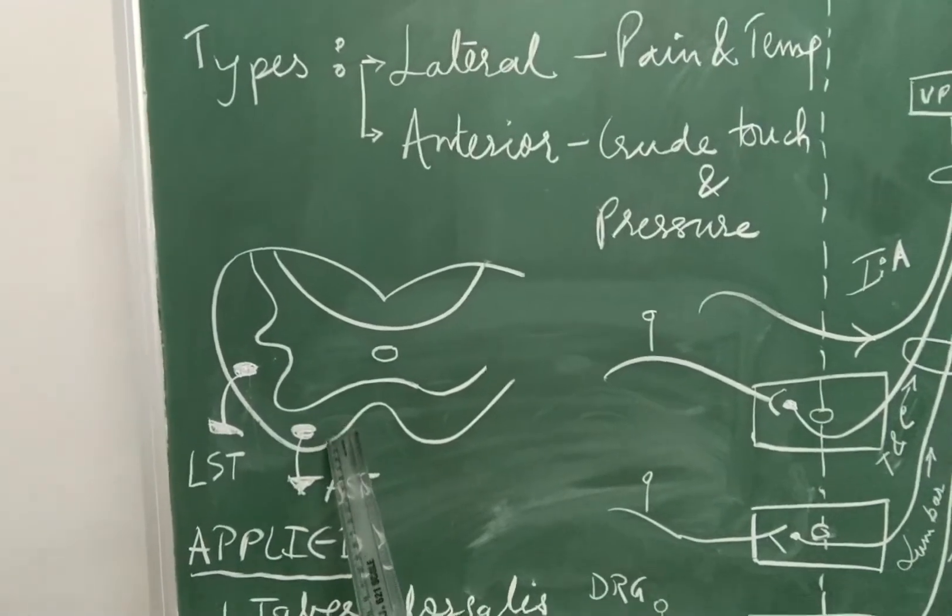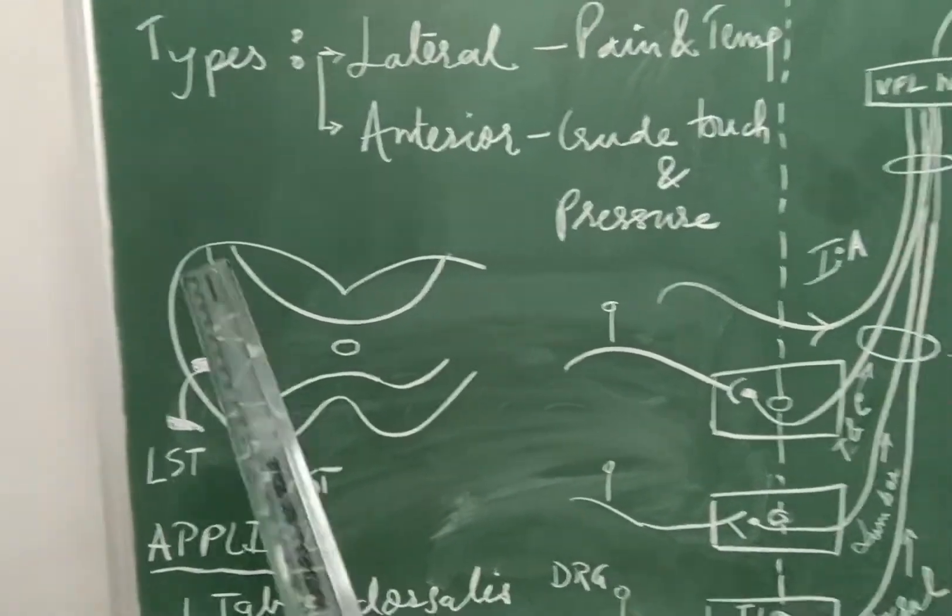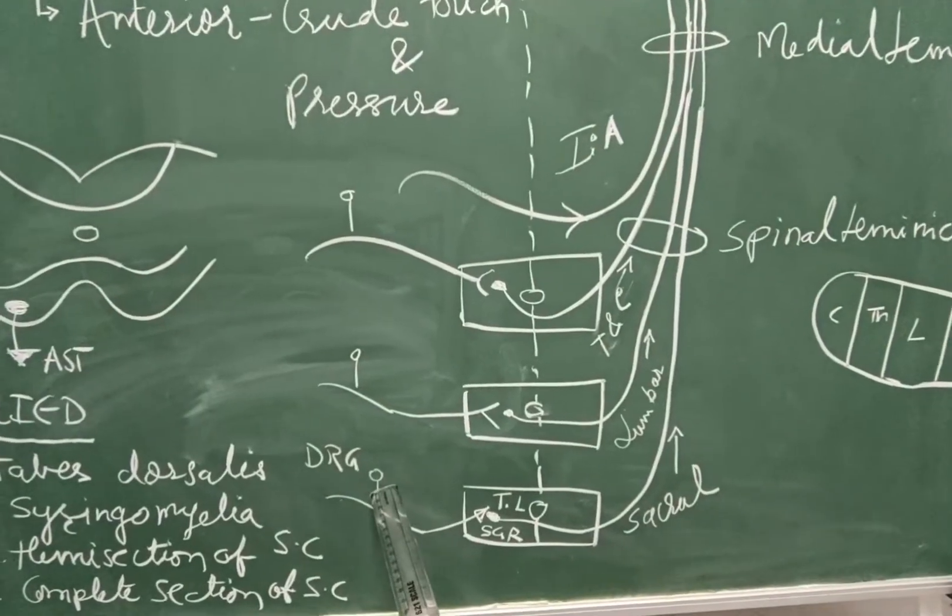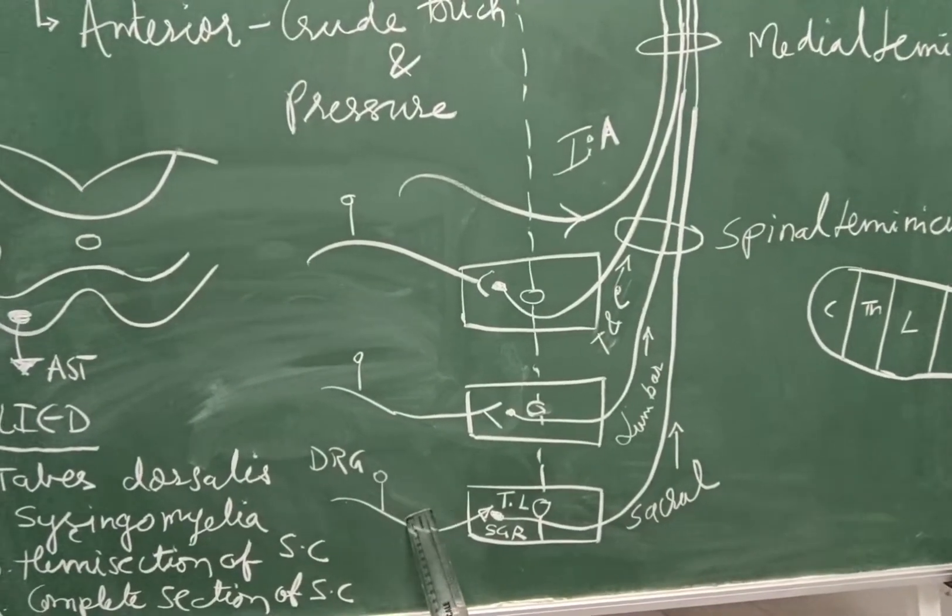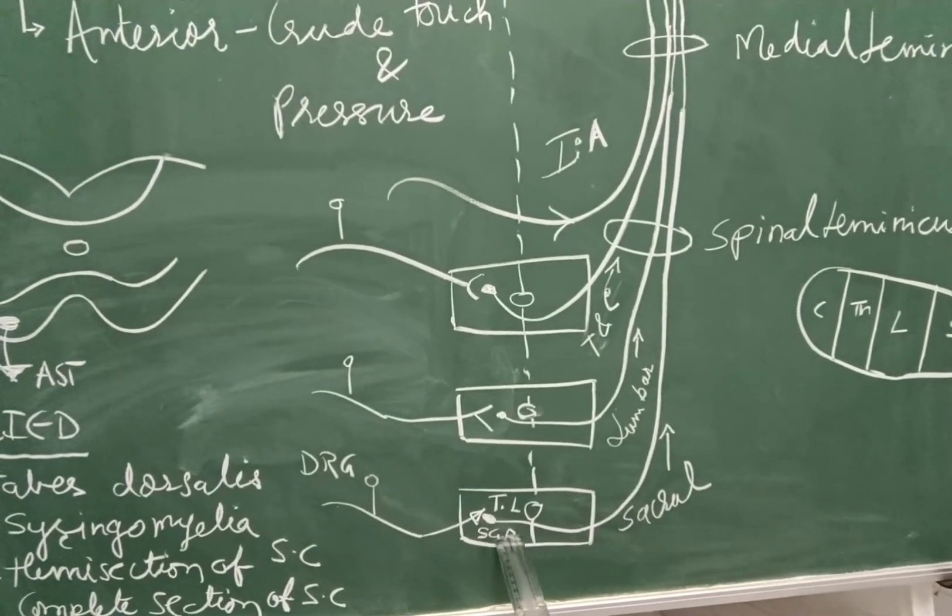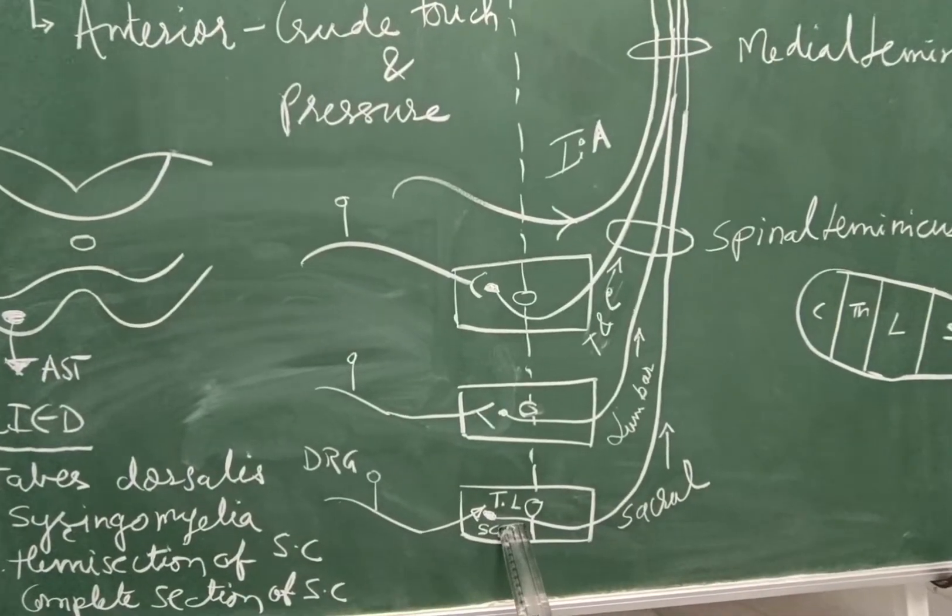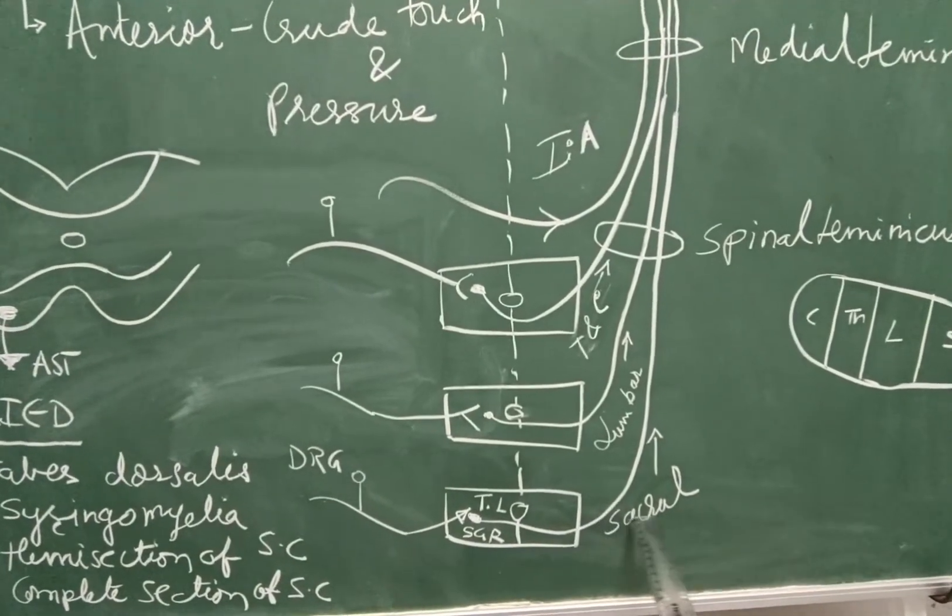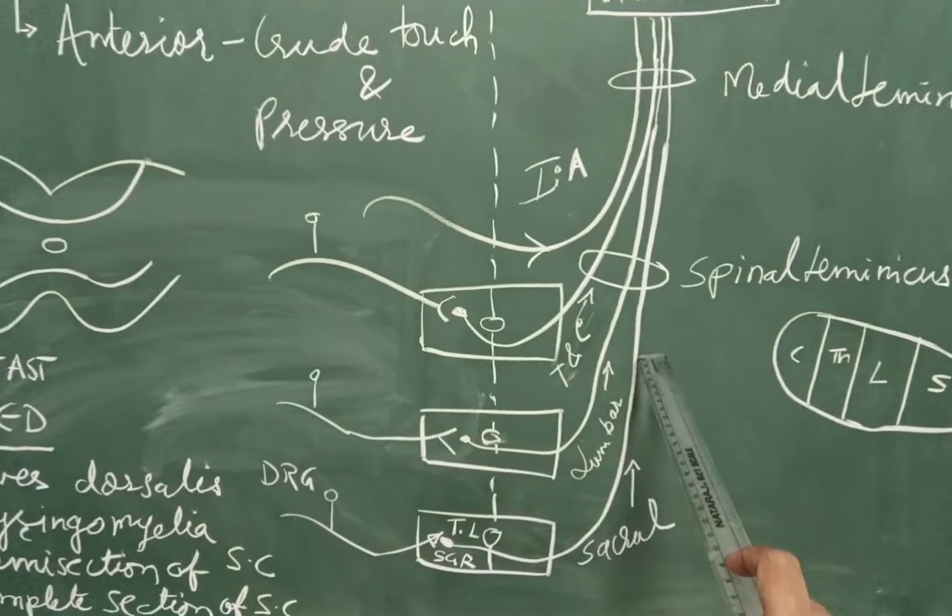Now this is a section of spinal cord which shows the tracts, lateral and anterior. These are the sacral fibres. The neurons of the dorsal root ganglion form the first order neuron of this tract. They enter the spinal cord. From here, the second order neuron begins and it ascends upwards.